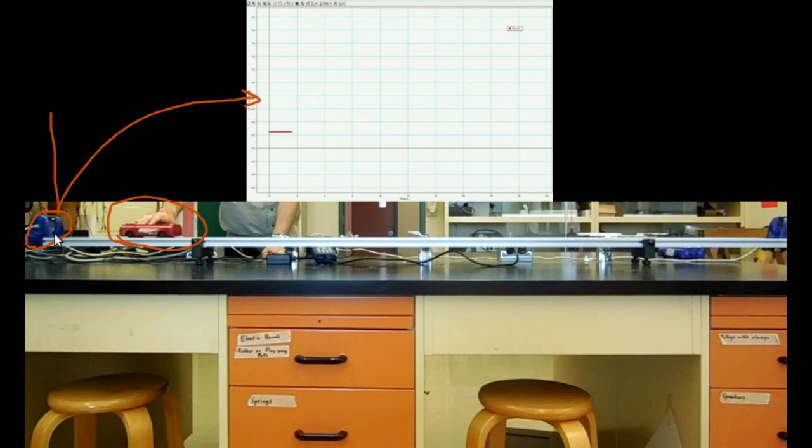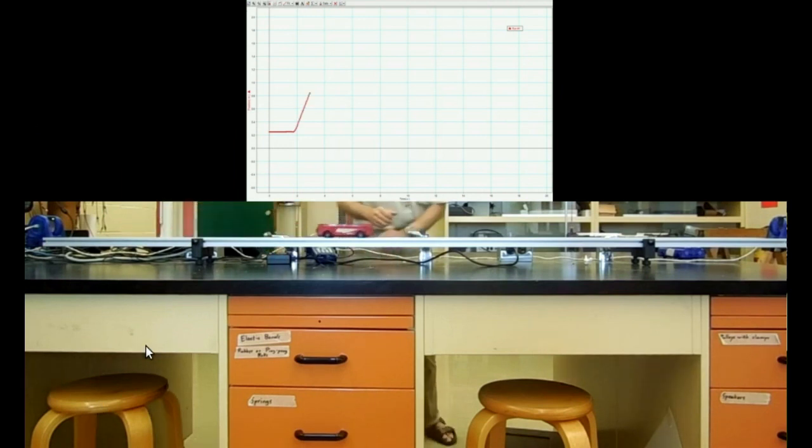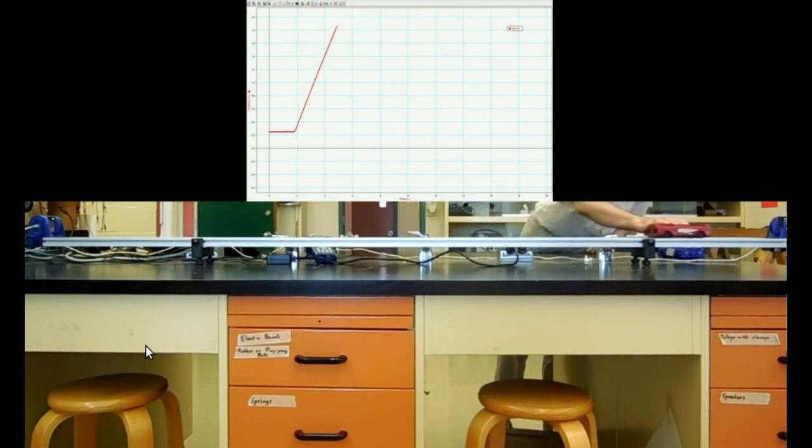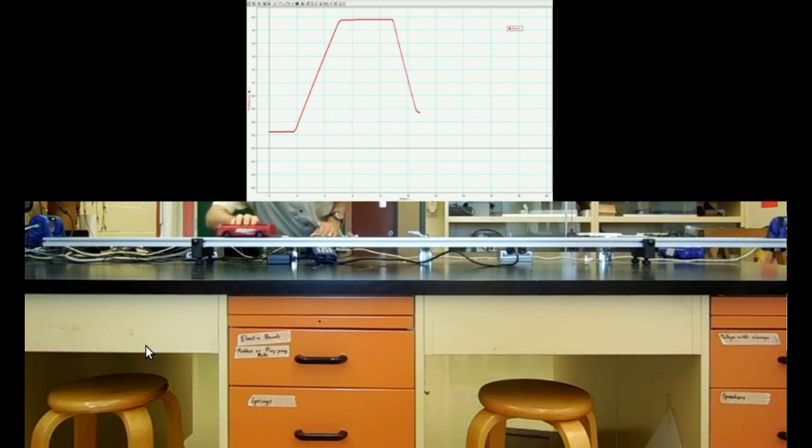And so you can think that essentially all it's doing is it's assuming there's a set of axes here, and it is just getting the x position of the cart as a function of time and graphing it for us. So, here is the data. You can hear the motion sensor clicking away, and I'll send the cart back in the other direction. And there's our data, which we can now look at more closely.